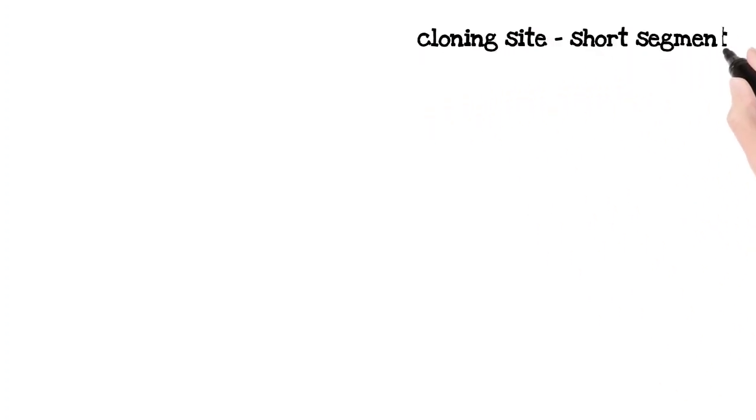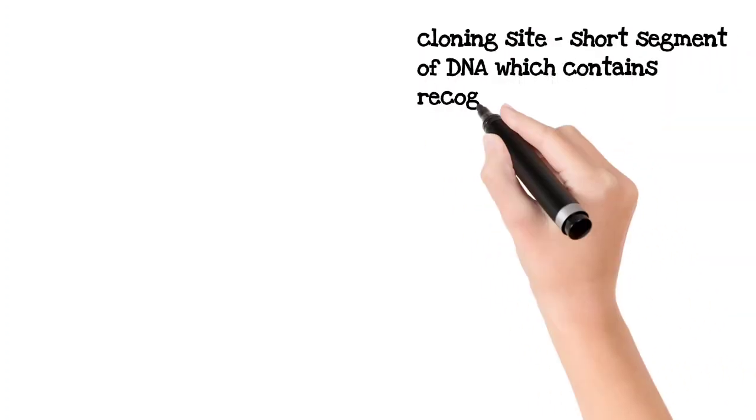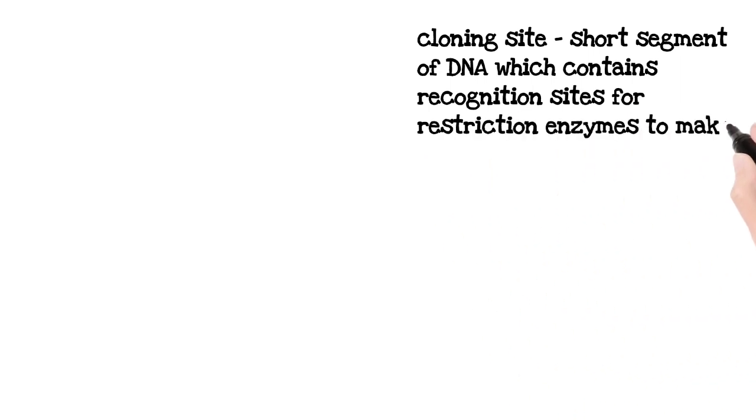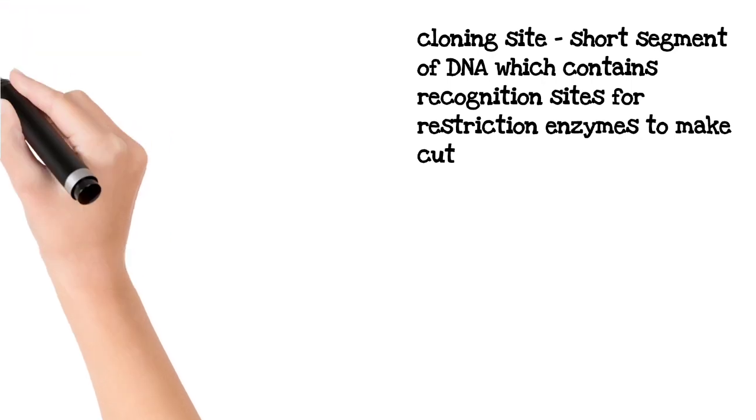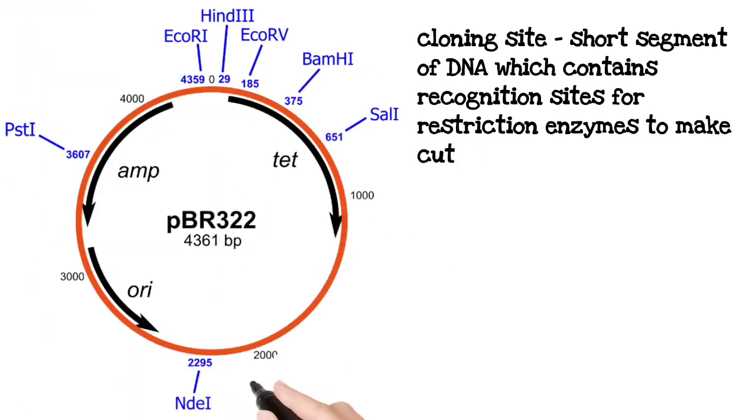Cloning site is the short segment of the plasmid DNA which contains recognition site for restriction enzyme to make cut. To understand this, let's take the example of PBR 322. Please listen this part carefully. PBR 322 is a plasmid that contains multiple cloning sites. These cloning sites are present on the selectable markers.